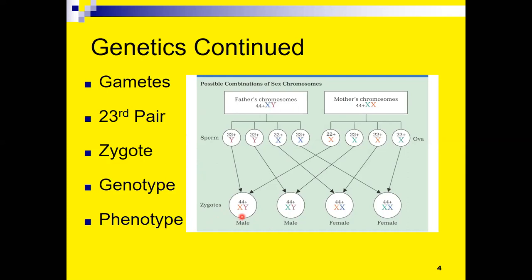The 23rd pair of chromosomes determines biological sex. If we inherit an X chromosome from our mother and an X chromosome from our father, the biological sex will be female. If we inherit a Y chromosome from our father and an X chromosome from our mother, we end up biologically male. The sum total of a person's genetic material is known as their genotype, while their phenotype is their appearance — what we can observe.